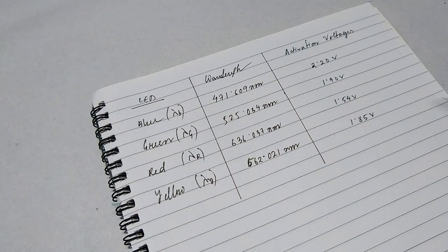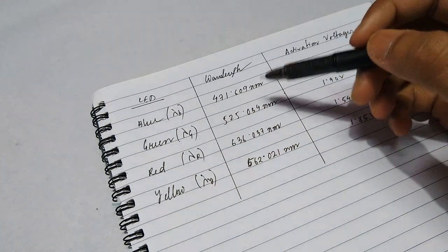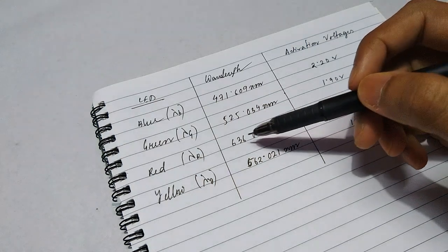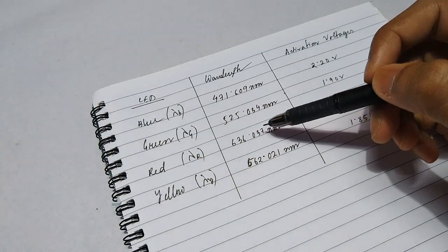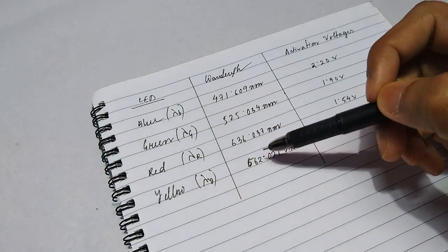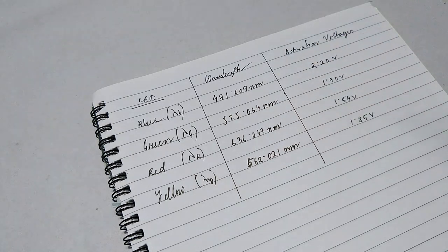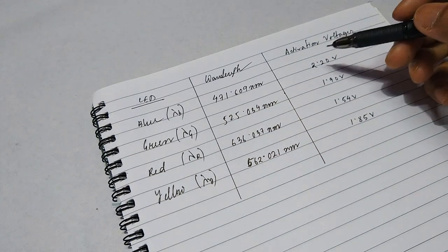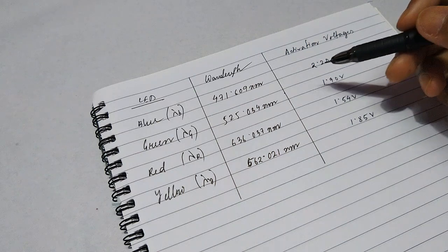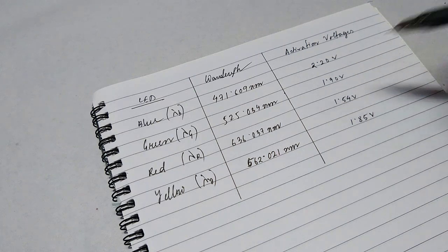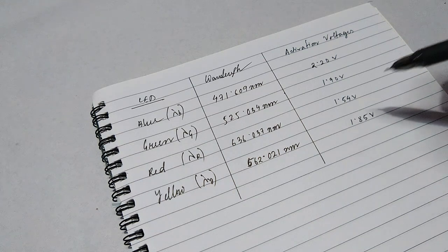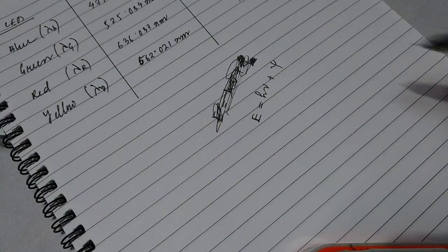I have finished calculating the wavelengths of the rest of the LEDs. For green it's 525.034 nanometers, for red it's 636.037 nanometers, and for yellow it's 562.021 nanometers. The respective activation voltages are: blue 2.20 volts, green 1.90 volts, red 1.54 volts, and yellow 1.85 volts.